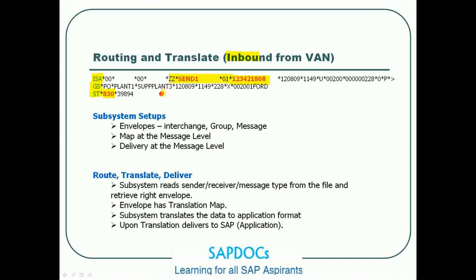Before processing the message within the subsystem, the subsystem will have three setups: envelopes — which cover interchange, group, and message levels — a map at the message level that translates EDI to IDOC format, and a delivery configuration at the message level that pushes the file toward SAP.